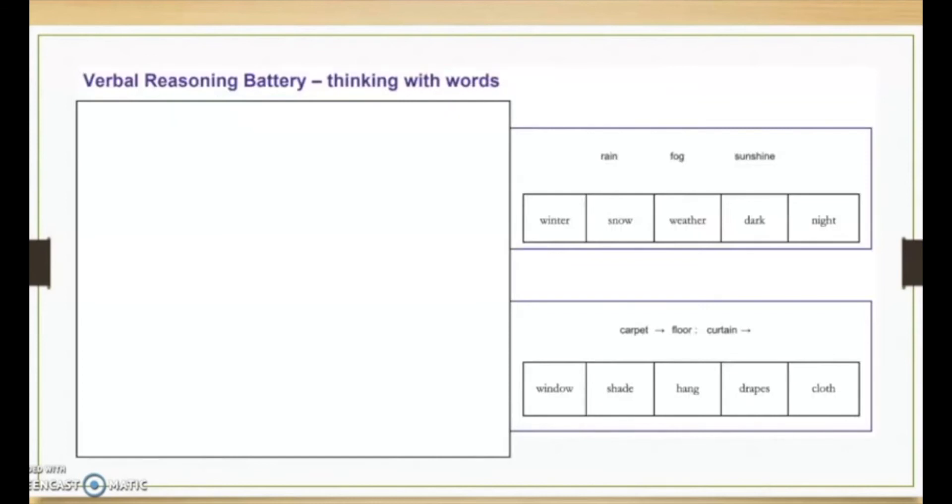So here we see an example. I'm going to let you guys do this. We have the verbal reasoning battery, and this is basically thinking with words. At the top right-hand corner, we see three words: rain, fog, and sunshine. And then we've got five words underneath, and your child has to figure out which word will come next in that sequence, or that will match those words. So think about it for a little while. Rain, fog, and sunshine. So what do you think?